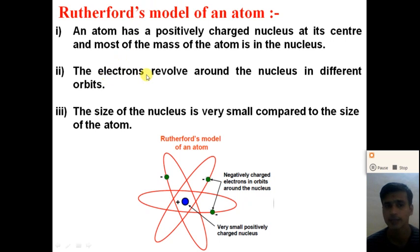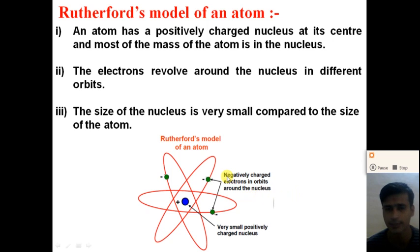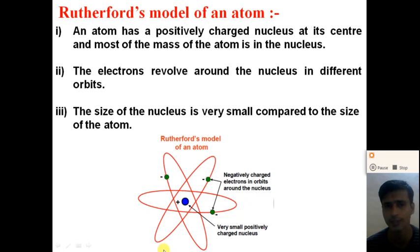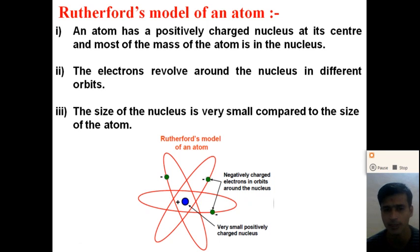The second point of Rutherford's model is that the electrons revolve around the nucleus in different circular orbits. Rutherford states that all the negatively charged electrons revolve in circular orbits around the nucleus. All positive charge and mass is concentrated in a very small region at the center called the nucleus.